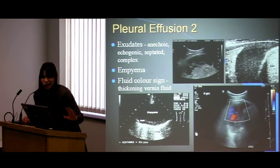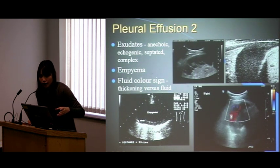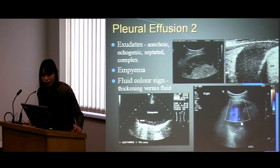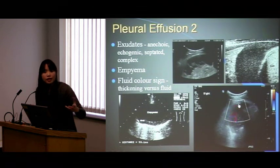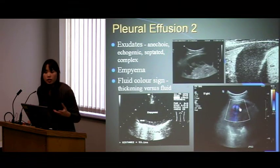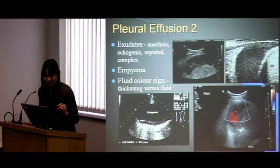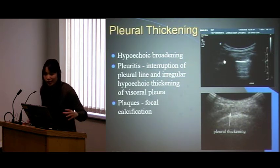There's a fluid color sign — you can use it if you want. Pop the Doppler onto the black area which you think is pleural effusion and you can see red and blue moving at about 60 beats per minute — the cardiac cycle pushing fluid back and forth. If it were something solid, it wouldn't bounce back that much and you wouldn't get that signal. This is useful for differentiating pleural thickening from fluid.